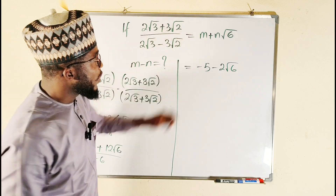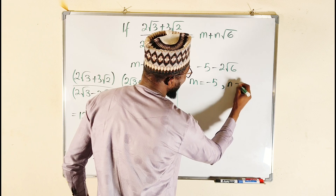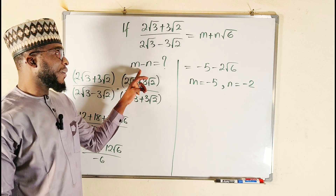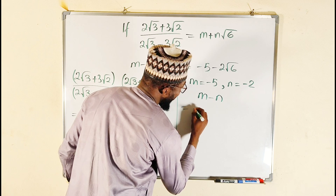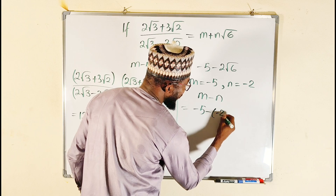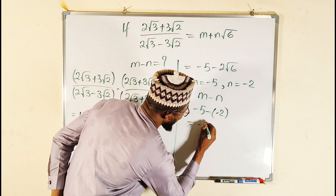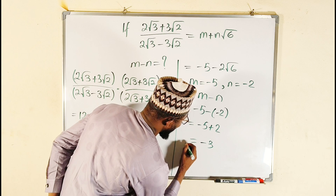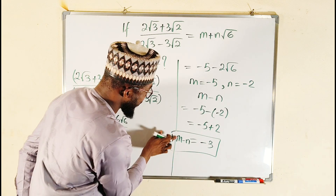So if we compare this with m + n√6, we can clearly see that m is equal to negative 5 and n is equal to negative 2, which is just the coefficient of √6. So m minus n equals negative 5 minus negative 2, which is negative 5 plus 2, and finally that gives us negative 3.